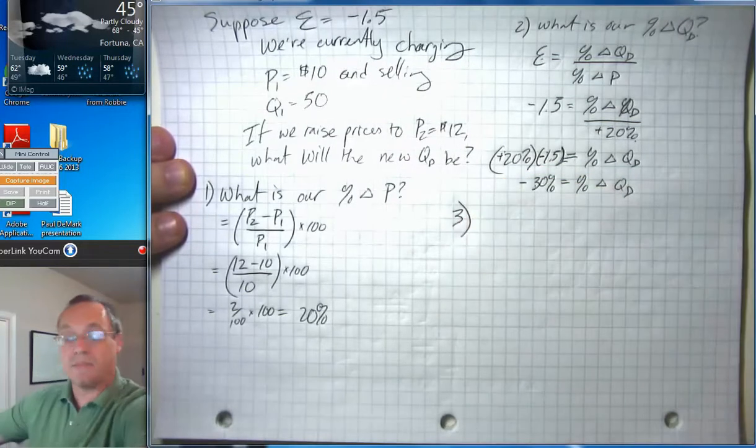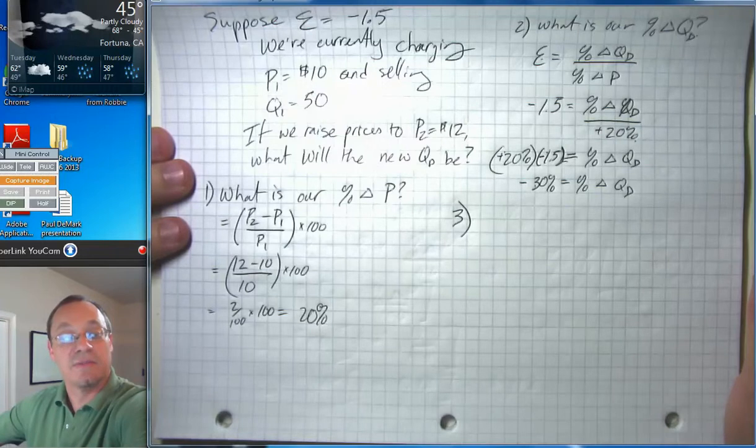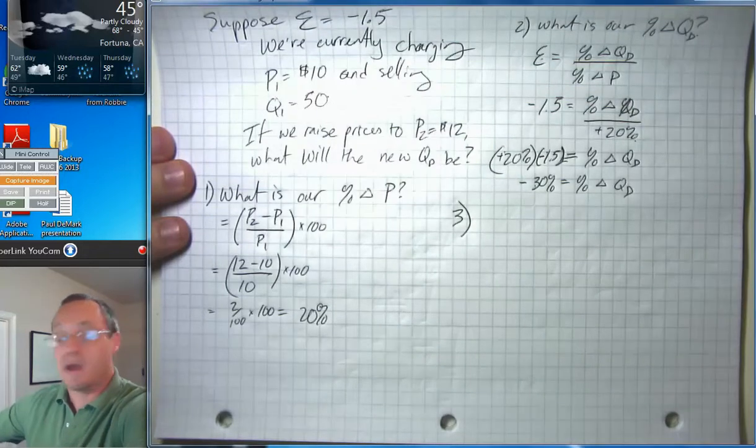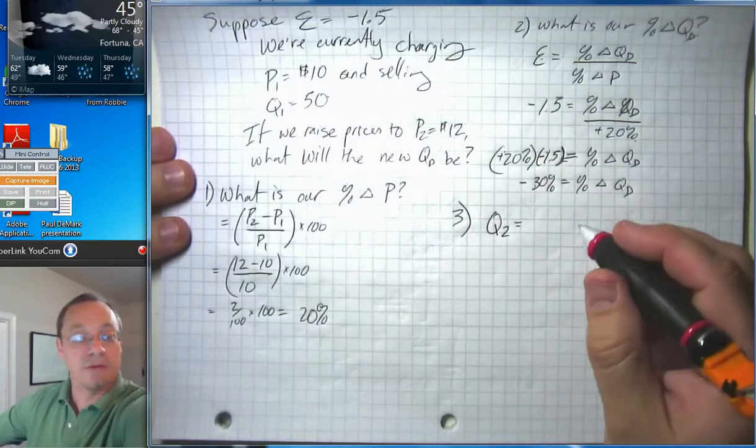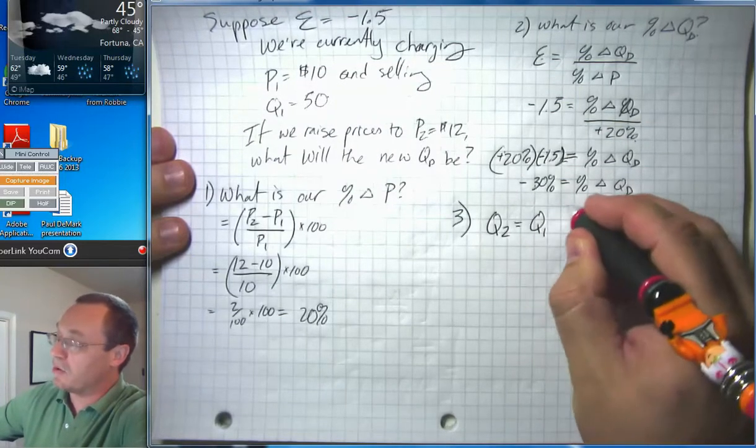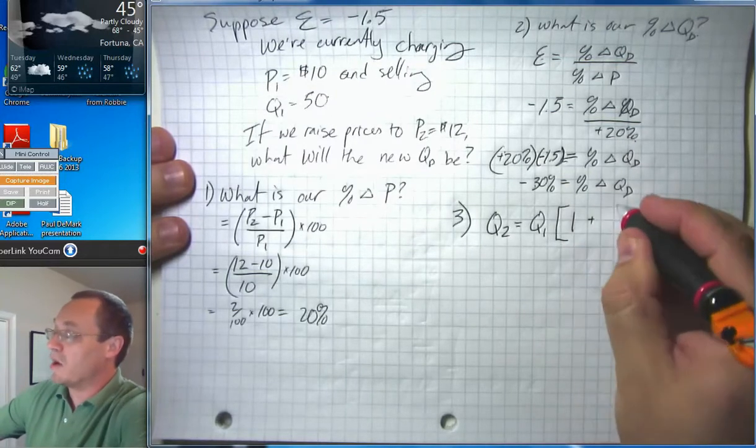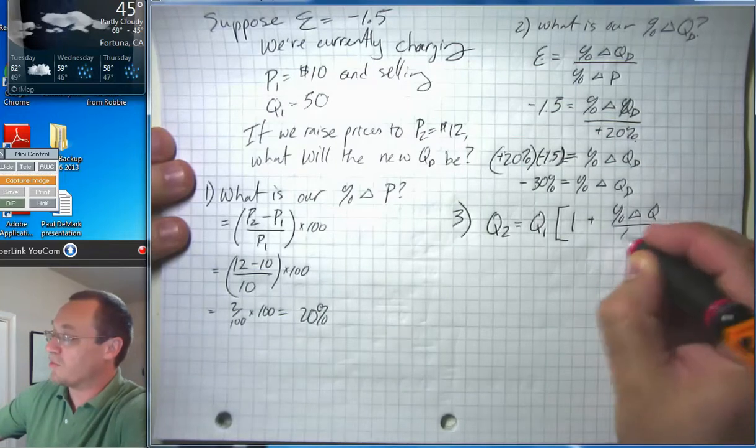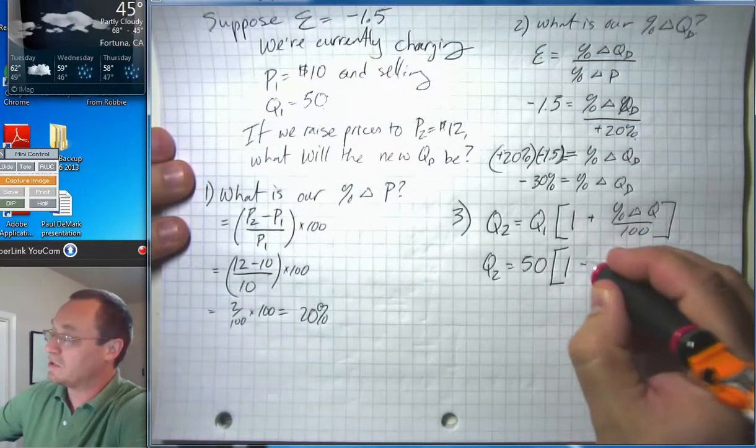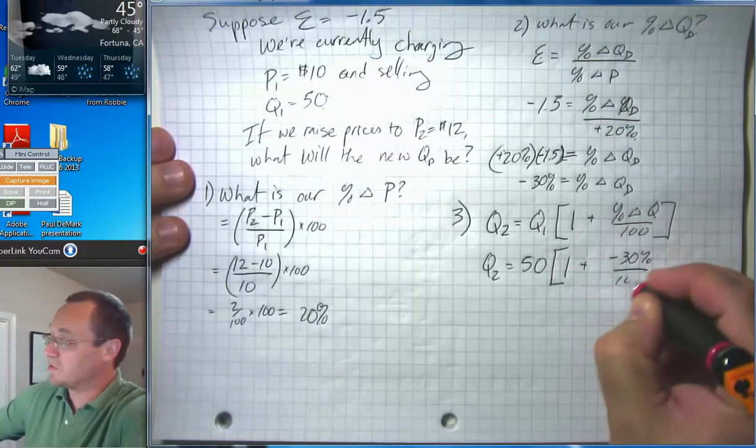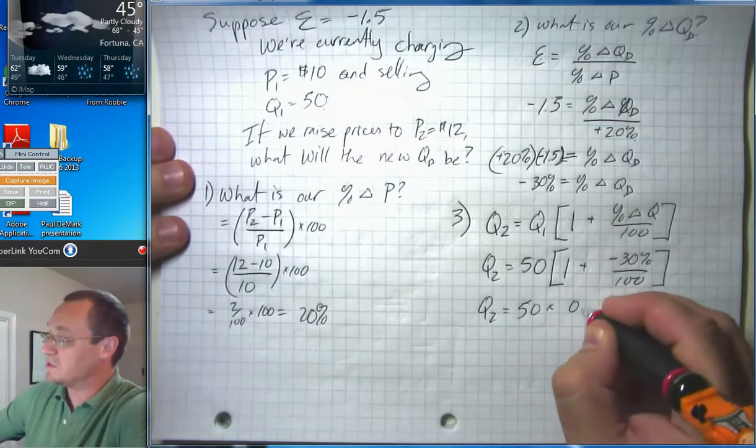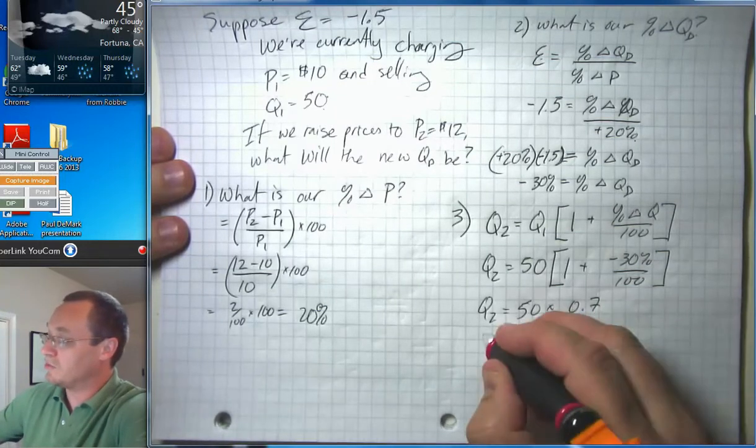Then finally, we're going to apply that negative 30% change in quantity demanded to our initial quantity demanded Q1. We talked about how to apply percentage changes in the last video. So our new quantity demanded Q2 equals our old quantity demanded Q1 times 1 plus our percent change in Q over 100. So Q2 equals 50, that was our original Q1, times 1 plus negative 30% over 100, or Q2 equals 50 times 0.7, or Q2 equals 35.